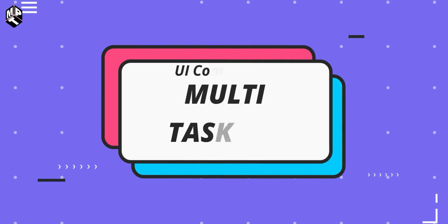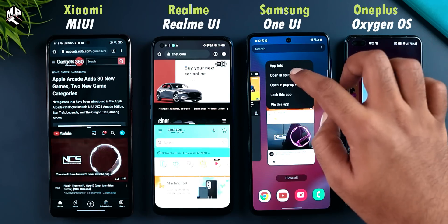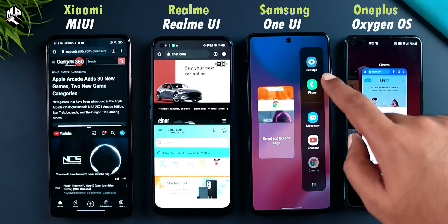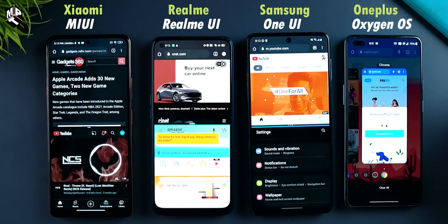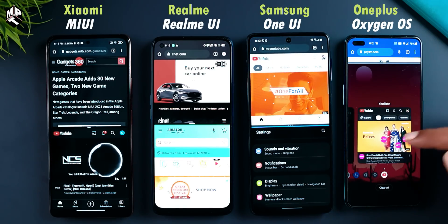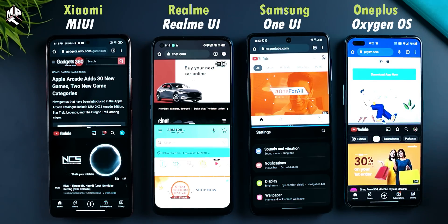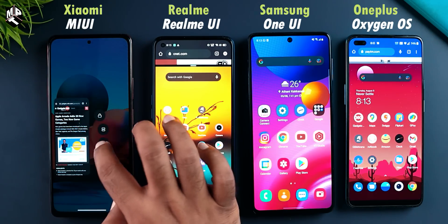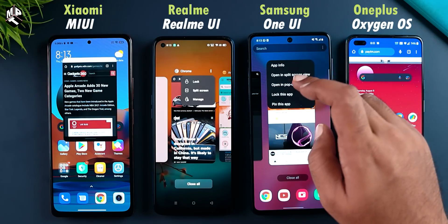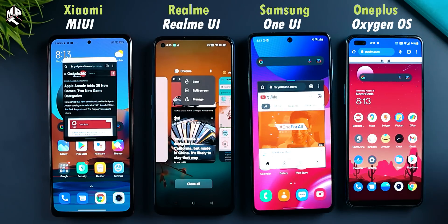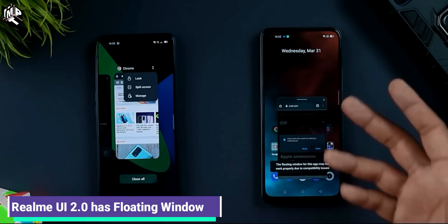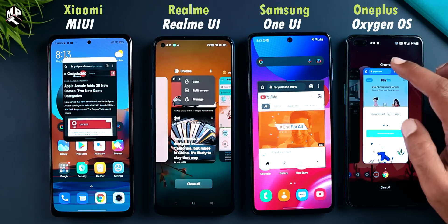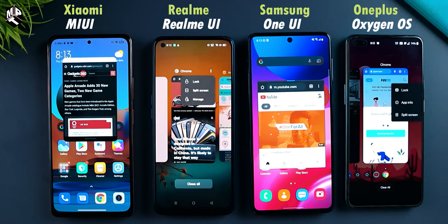We have a Multitasking feature — floating window by default. MIUI, Realme UI, One UI, and Oxygen OS all have split-screen options. But the floating window feature is not on Oxygen OS. MIUI, Realme UI, and One UI have three floating window options, while this floating window option is not available on Oxygen OS.